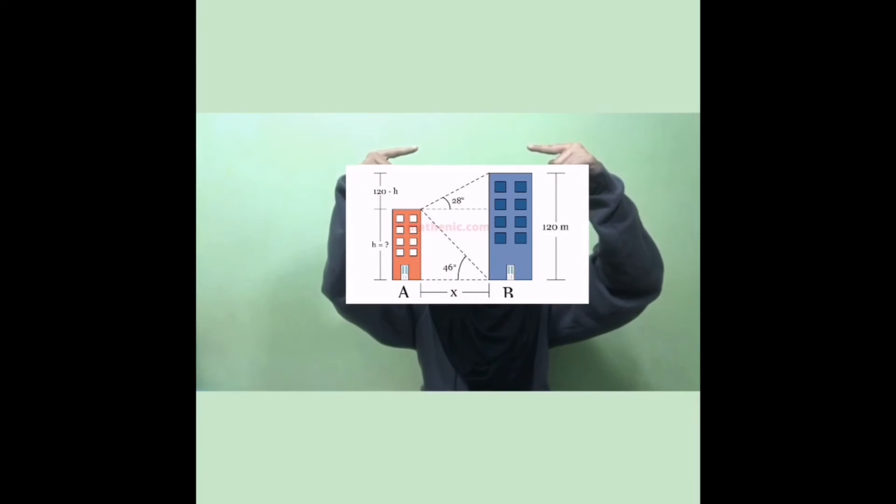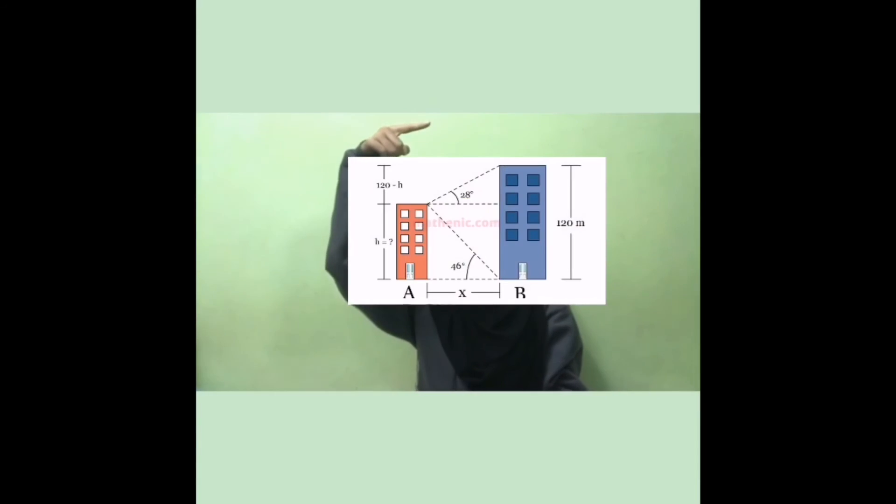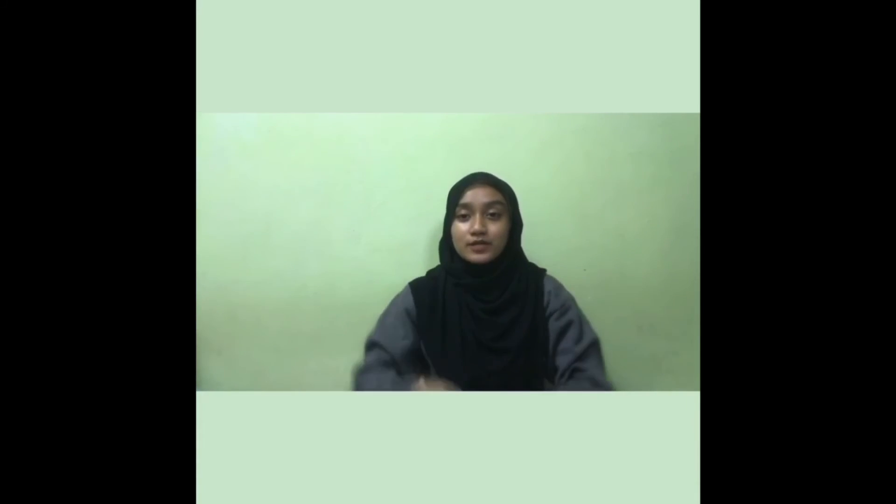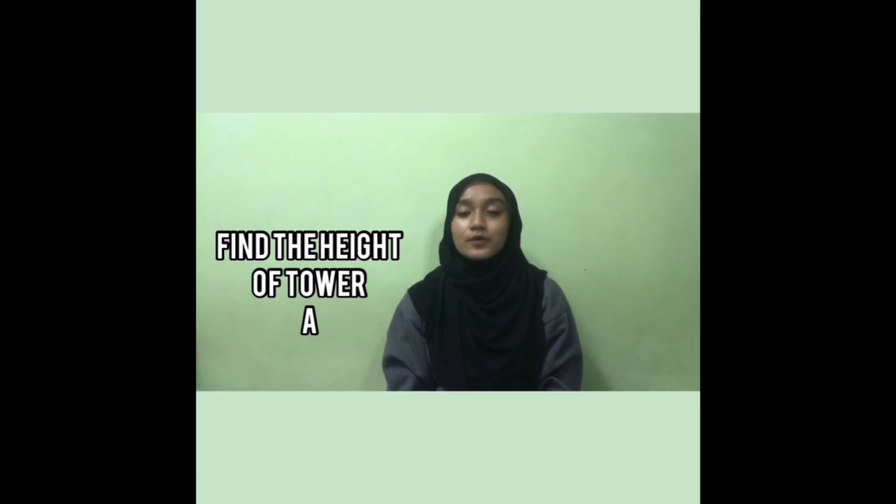The angle of depression from the top of tower A is 28 degrees and the angle of elevation of the top of tower A from the base of tower B is 46 degrees. The two towers lie in the same horizontal plane. If the height of tower B is 120 meters, find the height of tower A.